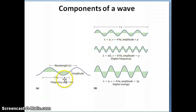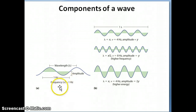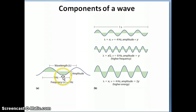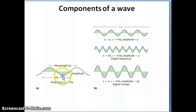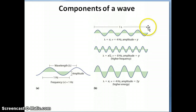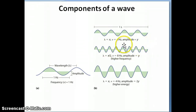Frequency is given by the symbol nu — the Greek letter nu, which looks a lot like V but is actually nu. The unit for frequency, instead of 'per second,' is also called hertz (Hz), named for the person who made many measurements of wave frequency. Looking at these examples: one hertz means one full wave passes through a point in one second; four hertz means four waves pass through in one second; eight hertz means eight waves pass through in one second, and so on.